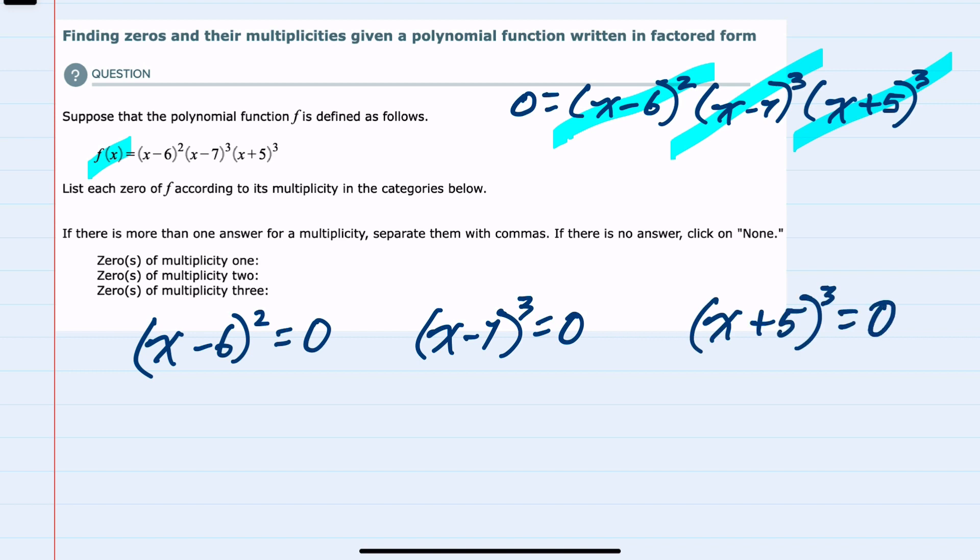I can look at the first one and I see that x minus 6 squared equals zero. If I'm squaring something and the result is zero, that means that what's being squared would have to be zero. We could solve for this by adding the six over, and we get a solution of x equals 6.